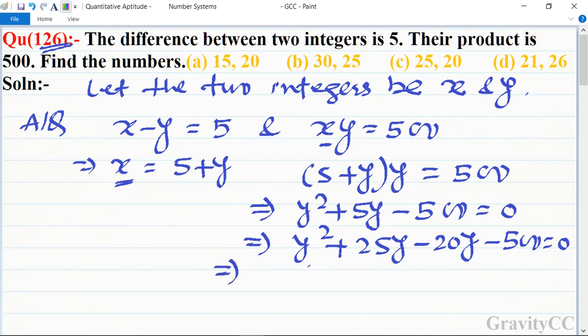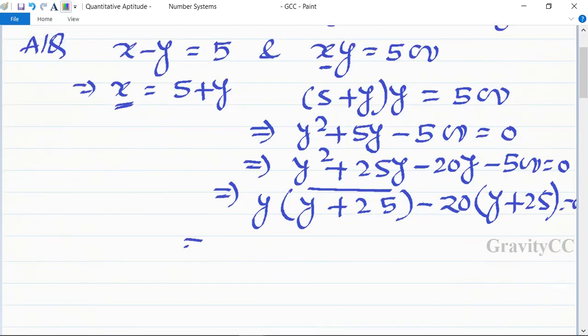0. So y is common from the first two parts, and taking 20 as common from the last two parts, minus 20, so is equal to 0. This implies that y plus 25 into y minus 20 is equal